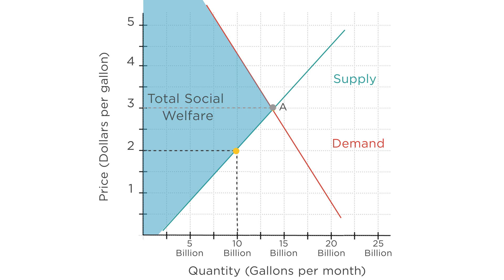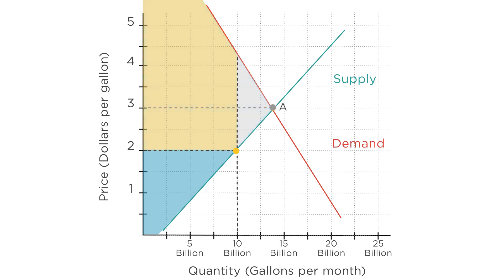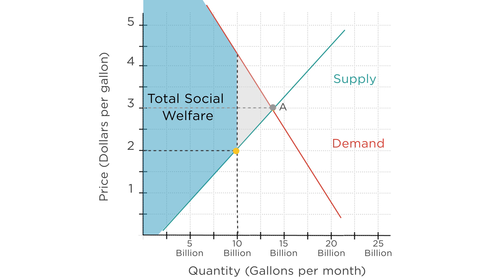So what happens to welfare? Consumer surplus is still the area between the price line and the demand curve, but only for the people who are actually getting to buy the smaller number of gallons of gas — consumer surplus is this area here. Producer surplus is the area between the price line and the supply curve, which is now just this little triangle here. Total social welfare is again the sum of these two areas. It's clear that total welfare is smaller than before the price change. Before the price change, total welfare was this entire triangle. After the price change, we lost this smaller triangle here. The government price mandate reduced total welfare by the amount of that smaller triangle.